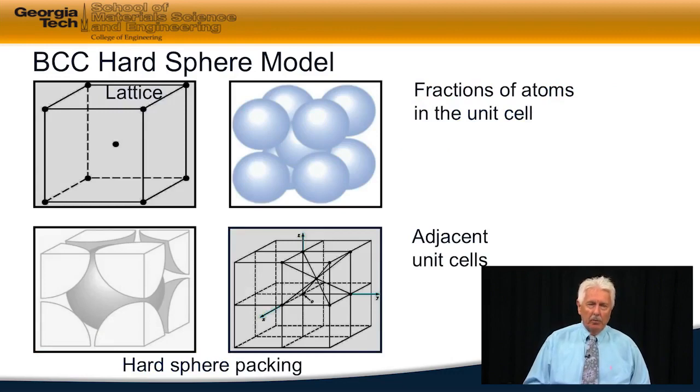We look at our structure, we have our lattice, and then we're putting hard spheres on top of each one of those lattice points. We're developing a hard sphere model for the BCC structure, just like we did with the FCC. It turns out that the location where the hard spheres touch is different in the BCC than it was in the FCC.